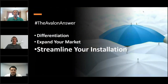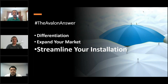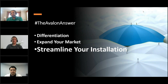The Avalon Answers has been a three-part webinar series. Part one was differentiation, part two was expand your market, and this final part is streamlining your installations. As a means of review, some of the differentiating factors of the Avalon are: one manufacturer, a 15-year warranty, modular design, and DC coupling for efficiency. The smart energy panel is a huge differentiating piece, as is the Avalon app.